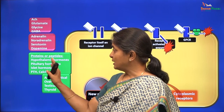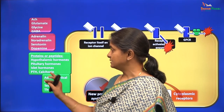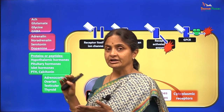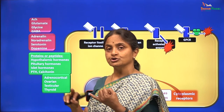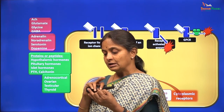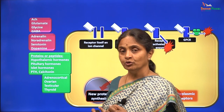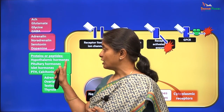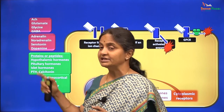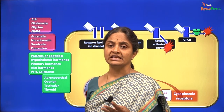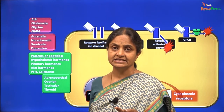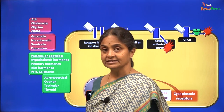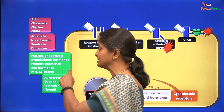Then we have the hormones — all the hypothalamic hormones, the releasing hormones: corticotrophin releasing hormone, thyrotrophin releasing hormone, gonadotrophin releasing hormone — they are all hypothalamic hormones. Then we have pituitary hormones: growth hormone, ACTH, TSH, FSH, LH, prolactin.